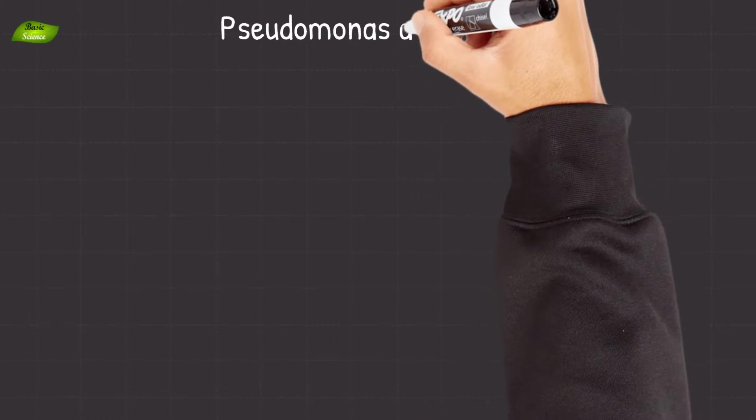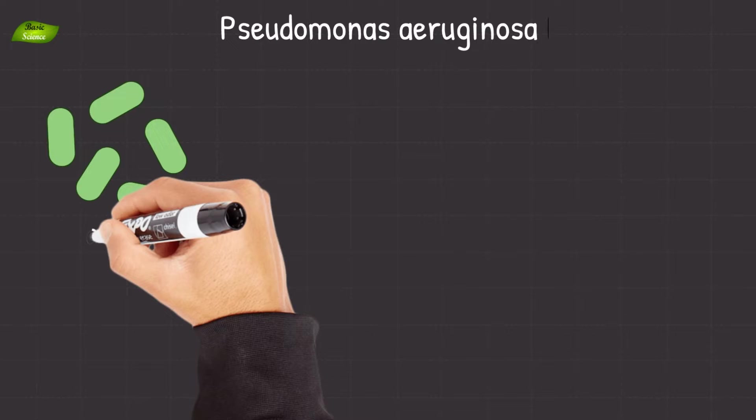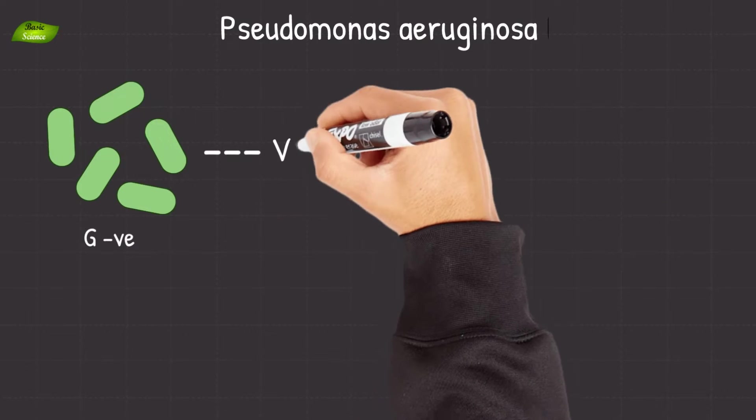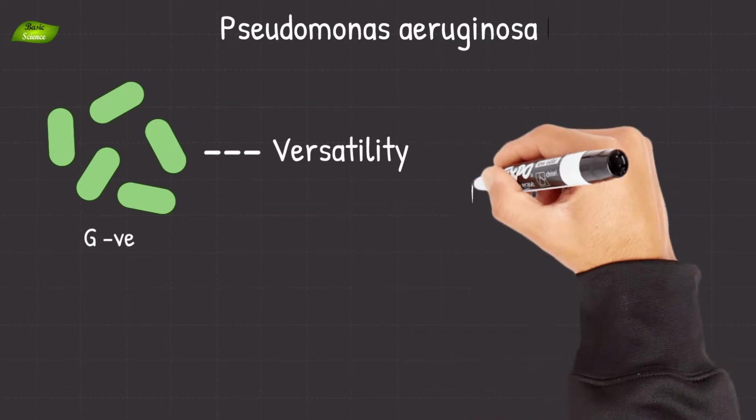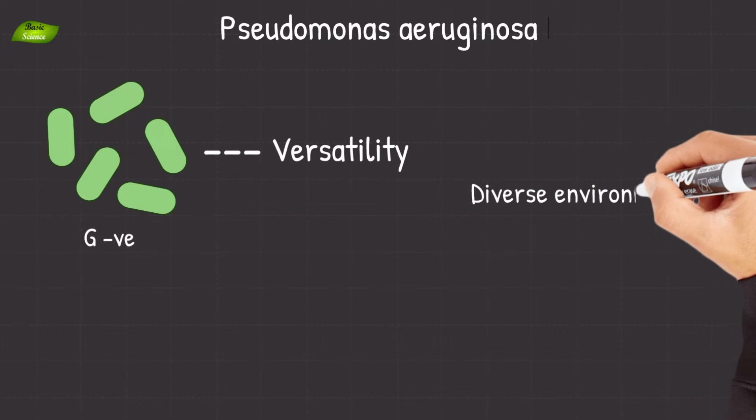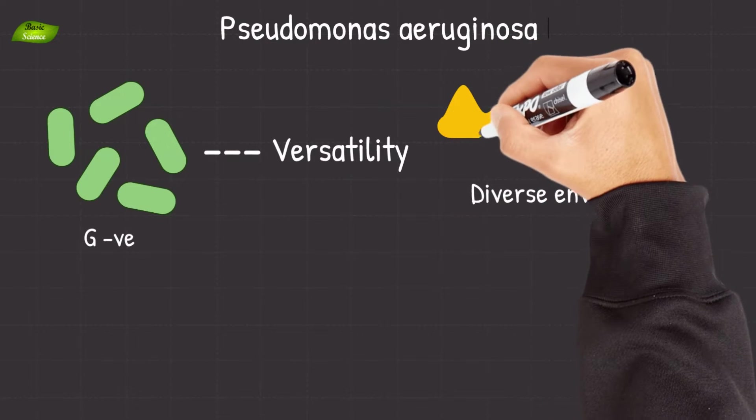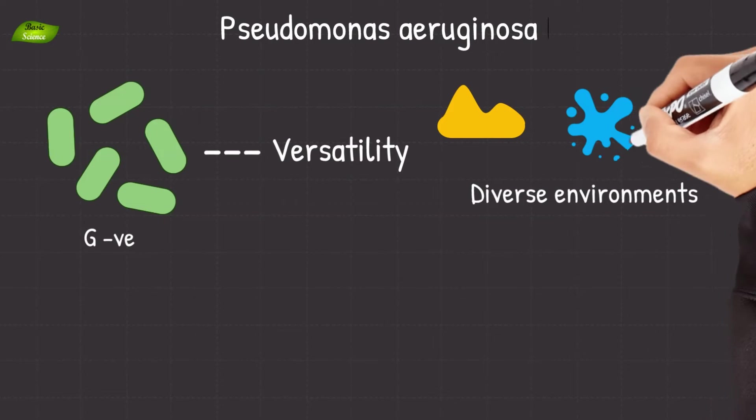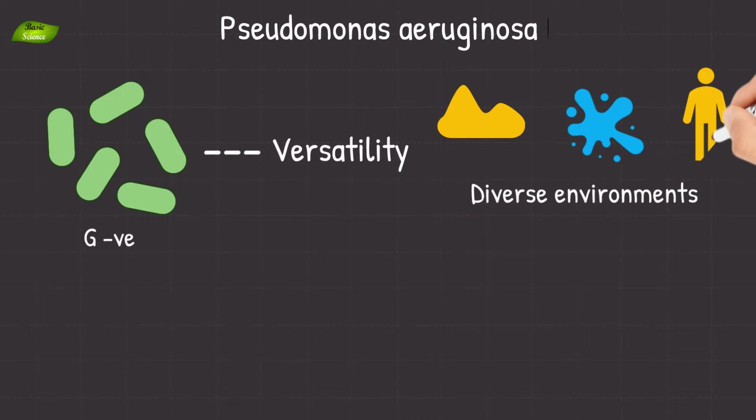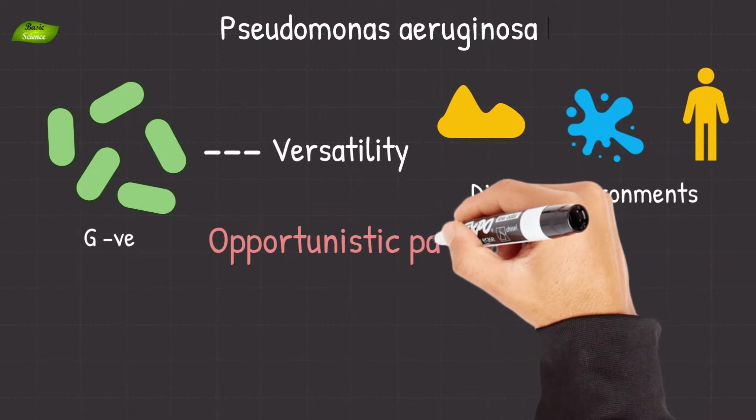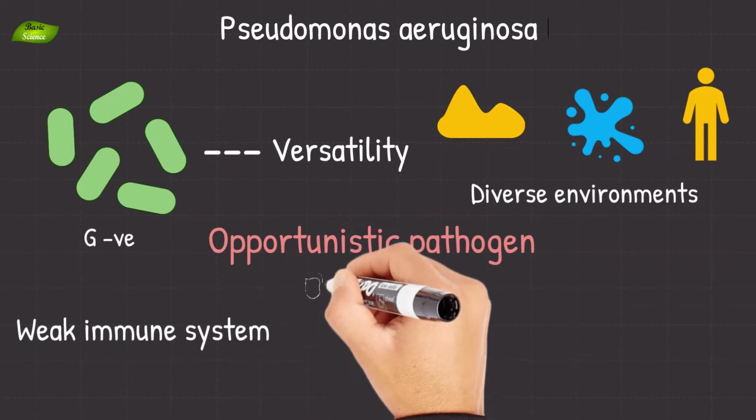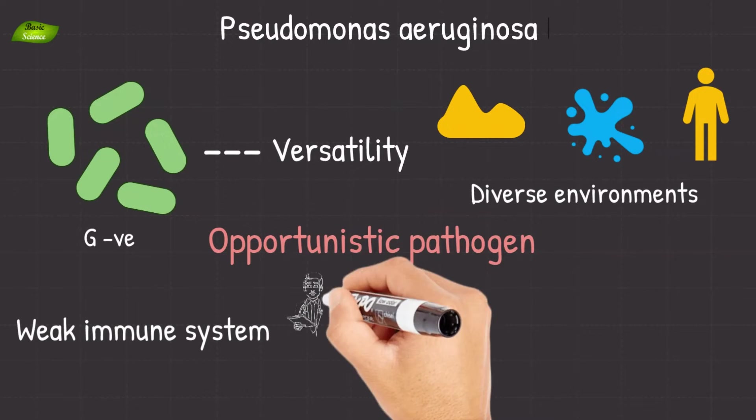Pseudomonas aeruginosa is a gram-negative bacterium known for its versatility and adaptability, often found in diverse environments such as soil, water, and even the human body. Notably, this bacterium is an opportunistic pathogen, causing infections in individuals with compromised immune systems.